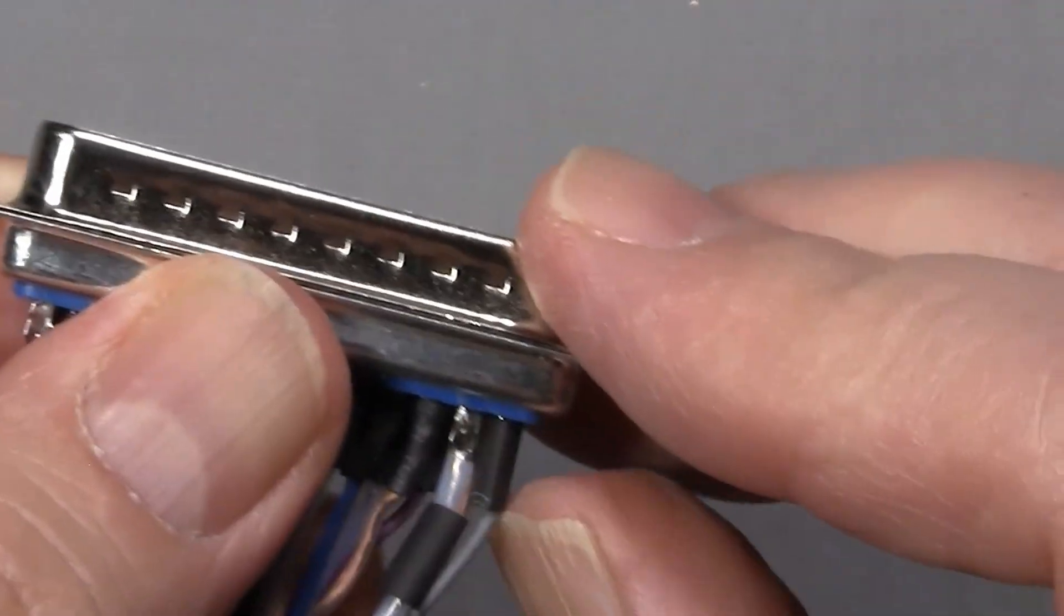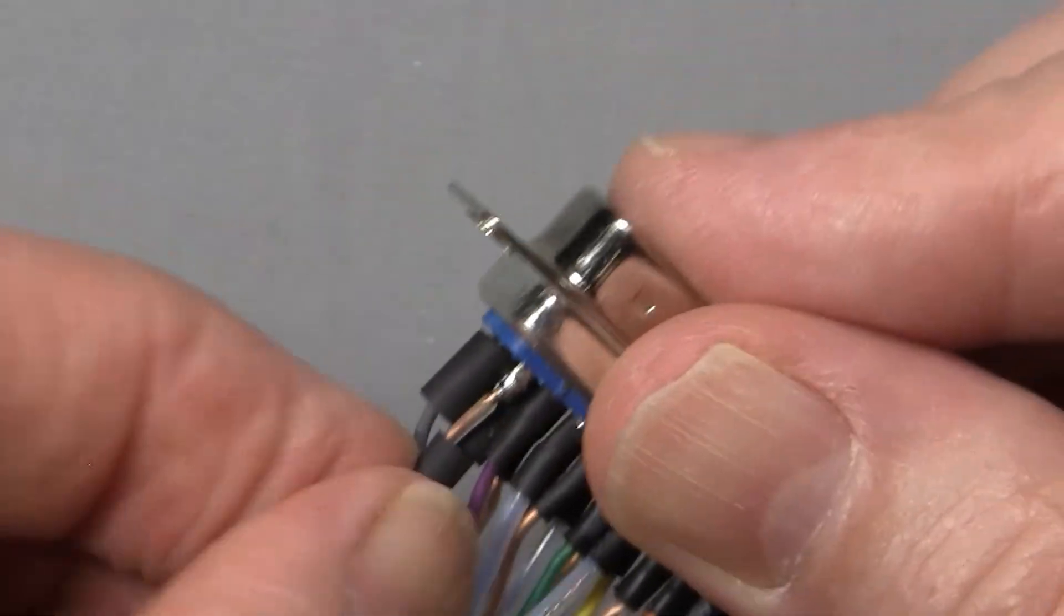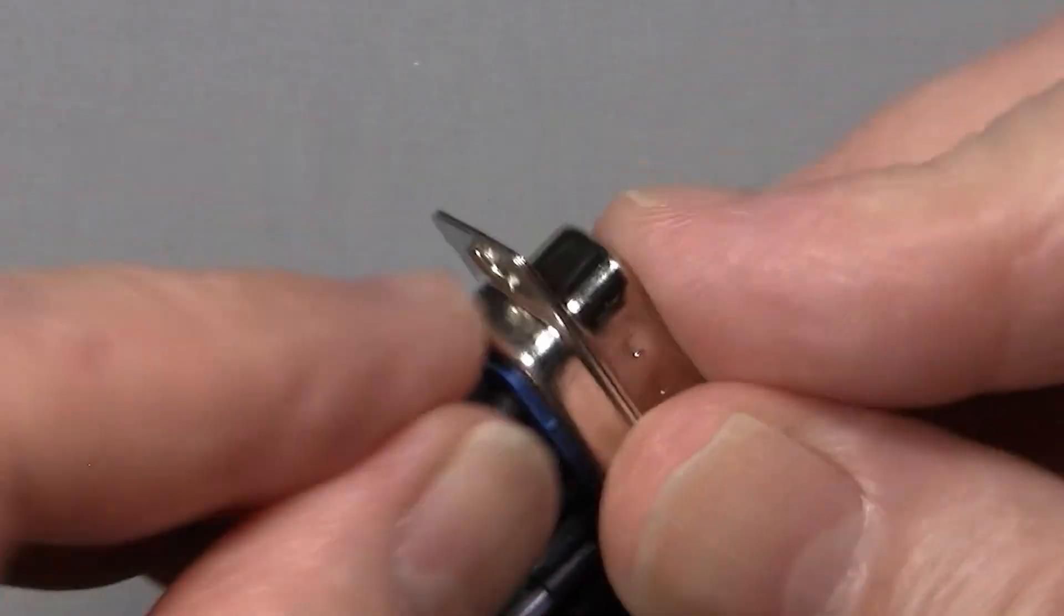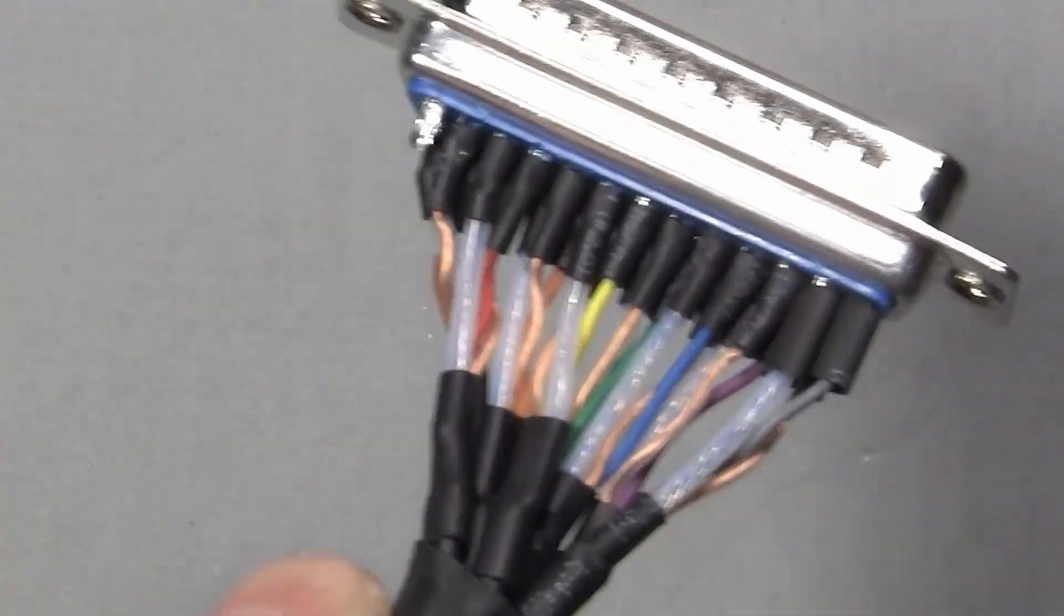Now that I have those three securely soldered, what I'm going to do is slide the shrink down for those three. I do the shrink on each channel as I go. And that makes space for you to wire the next channel.